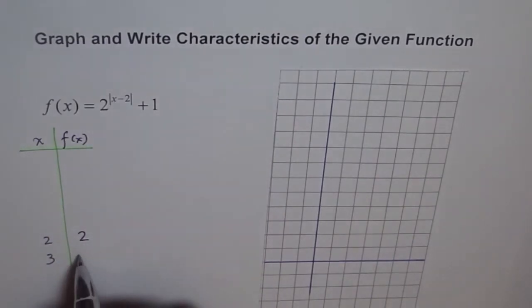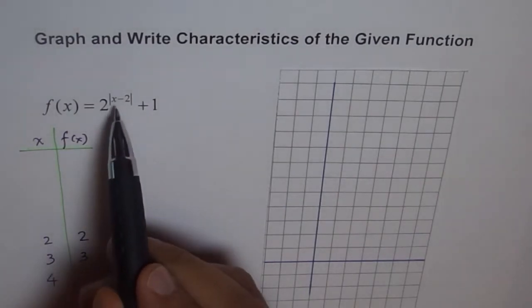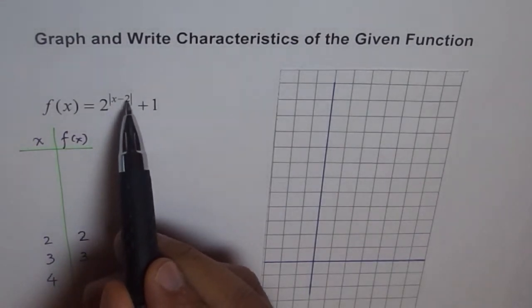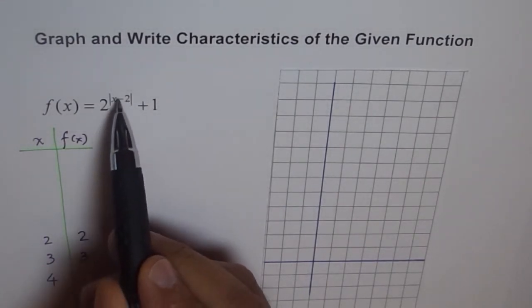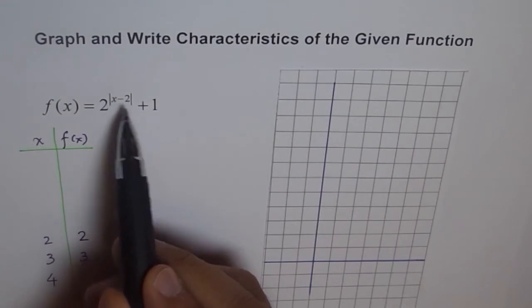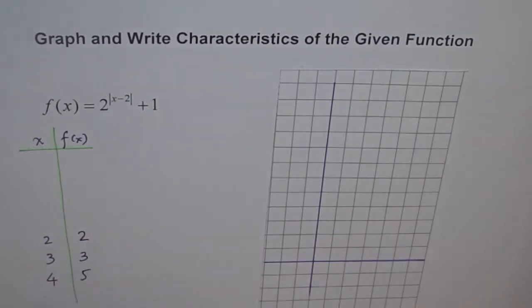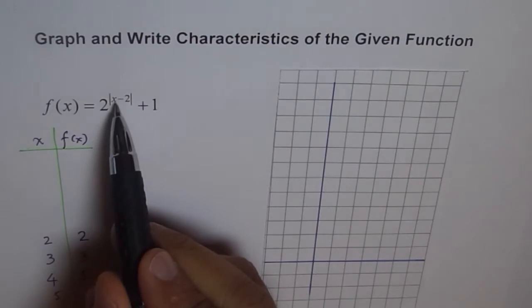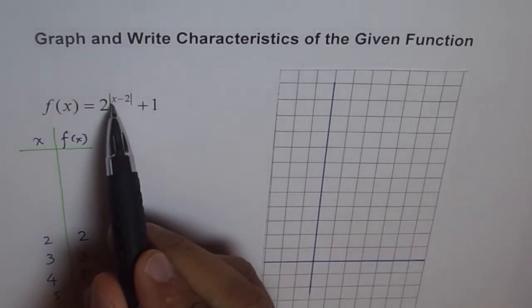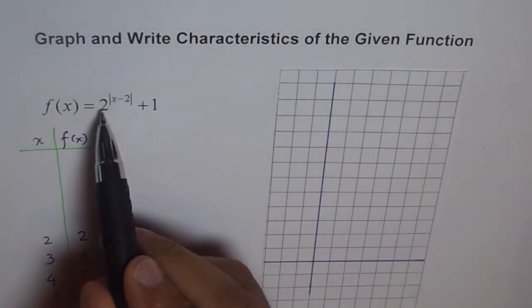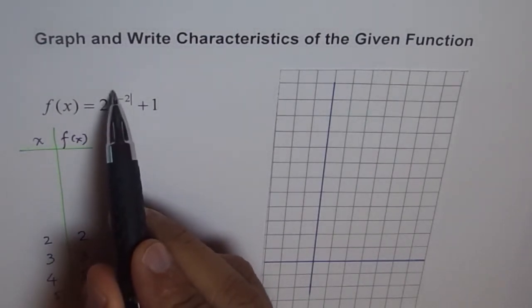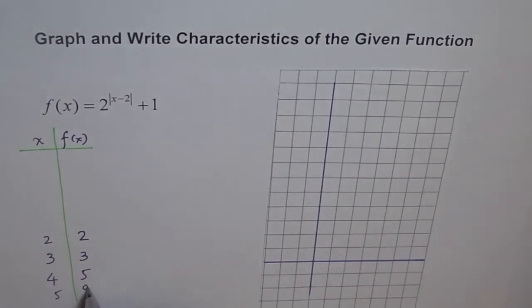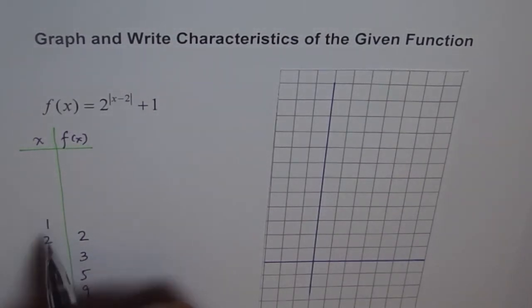If x is 4, then 4 minus 2 is 2, 2 squared is 4, and 4 plus 1 is 5. If x is 5, then 5 minus 2 is 3, 2 to the power of 3 is 8, and 8 plus 1 is 9.